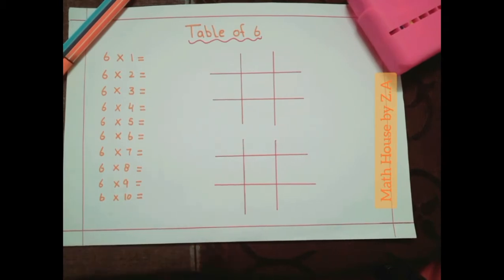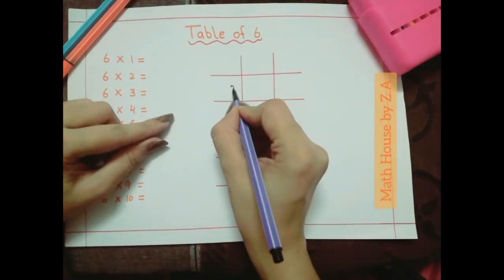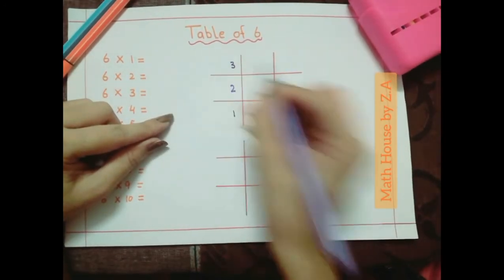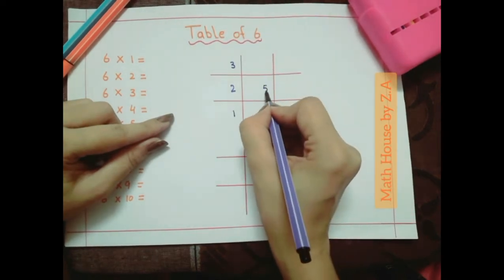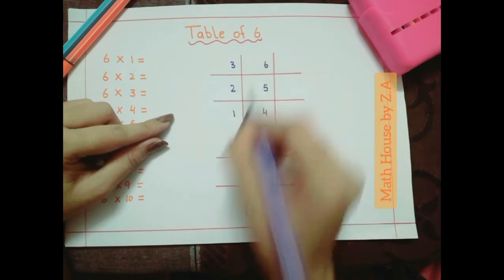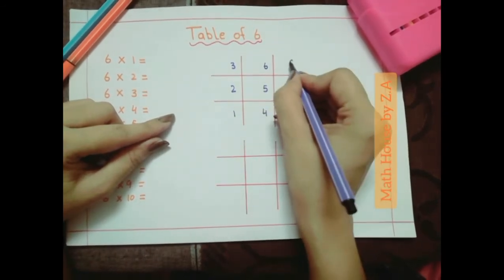So draw the 2 grids of 3 by 3 and write the numbers here. Like this 1, 2, 3, 4, 5, 6 and then 7, 8 and 9.